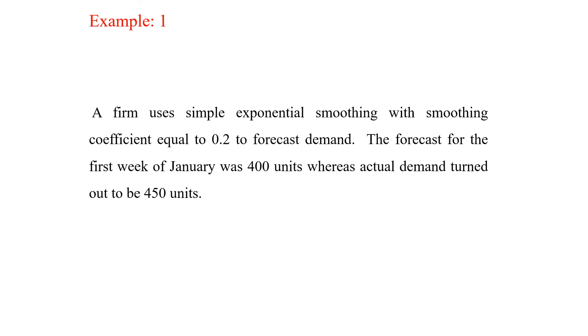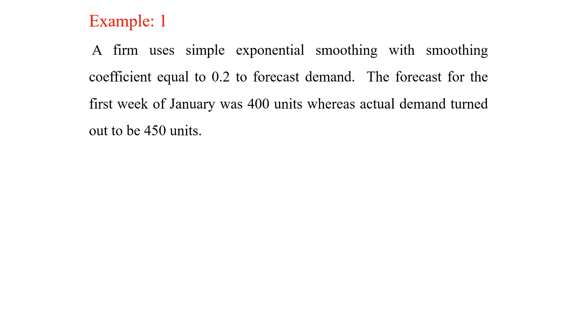So here is an example where a company uses exponential smoothing method with smoothing coefficient equal to 0.2 to forecast demand. The value of alpha is 0.2. The forecast for the first week of January was 400 units whereas actual demand turned out to be 450 units.